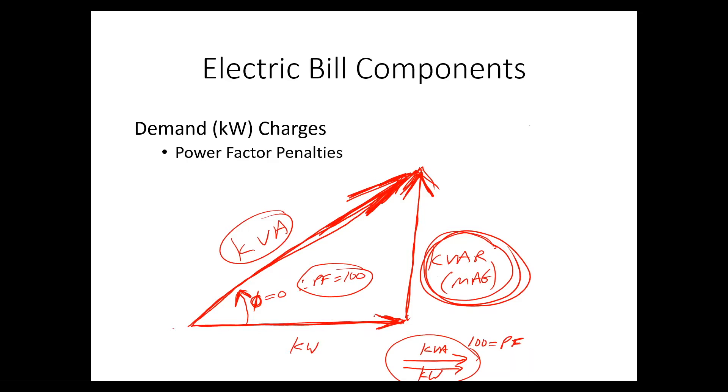The game with power factor penalties is to maximize your power factor, or at least get it to a level where the utility won't penalize you. If the power factor goes below 80% in most utilities, if this angle is such that the power factor is less than 80, most utilities are going to bill you a special power factor charge. We want to avoid that.